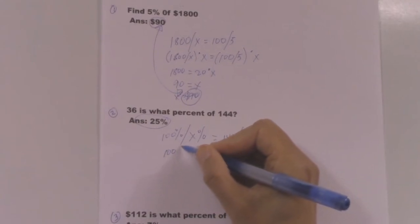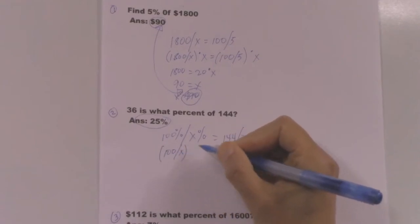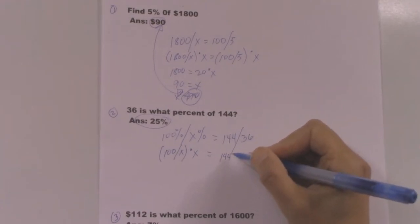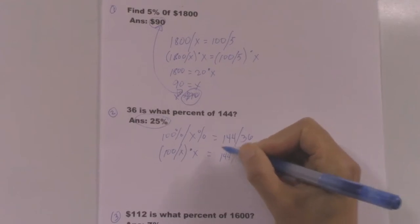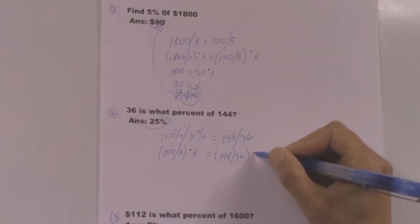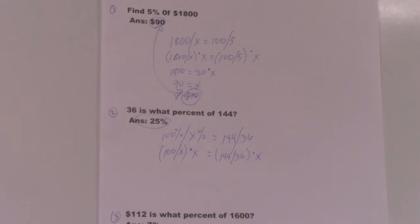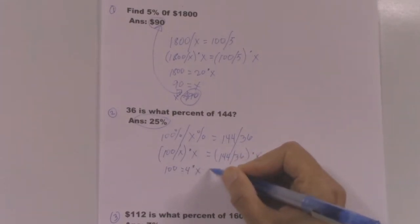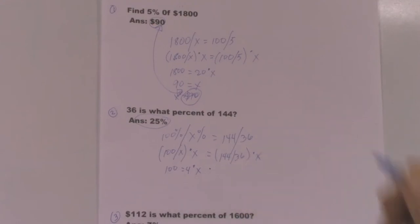So again, 100% by x% equal to 144 by 36 divided by 36. So 100 divided by x times x equal to 144 by 36 times x. We multiply both sides of the equation by x, getting 100 equals 4 times x.